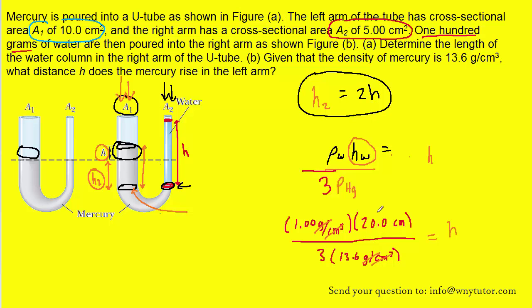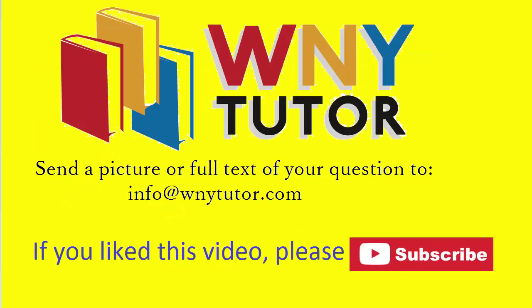The grams per centimeter cubed will cancel, and that's just going to leave us with centimeters. And 0.490 centimeters to be precise. So that will represent the height that the mercury column rises in the left arm, that very small distance h that was marked in the figure.